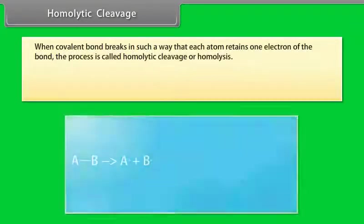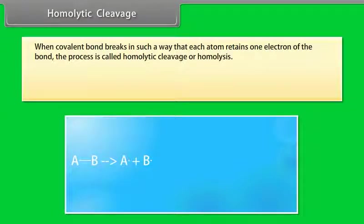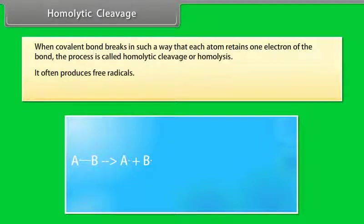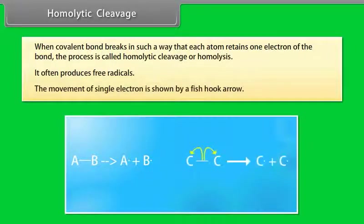Homolytic cleavage occurs when a covalent bond breaks such that each atom retains one electron of the bond — this process is called homolytic cleavage or homolysis. It often produces free radicals. The movement of a single electron is shown by a fishhook arrow.